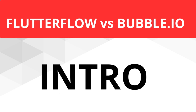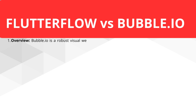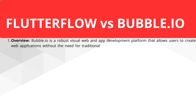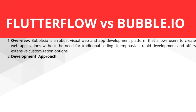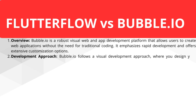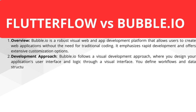For ease of use, I'll call Bubble.io just Bubble. First, an overview. Bubble is a robust visual app development platform that allows users to create web applications without traditional coding. It emphasizes rapid development and offers extensive customization options. Bubble follows a visual development approach where you design your application's user interface and logic through a visual interface, defining workflows and data structures using a point-and-click method.